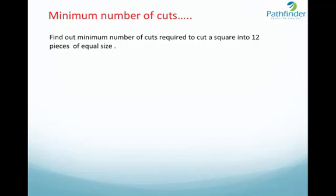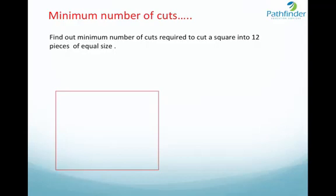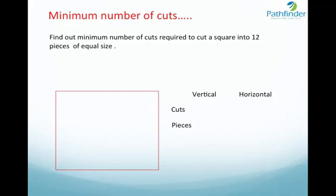Let us take a square and try to apply different cuts in different ways to identify how we can arrive at a solution to find the minimum number of cuts required to cut a square into 12 pieces, and then we can generalize. We have vertical cuts, horizontal cuts, and pieces. One must understand that the number of pieces generated will be one more than the number of cuts along any dimension.